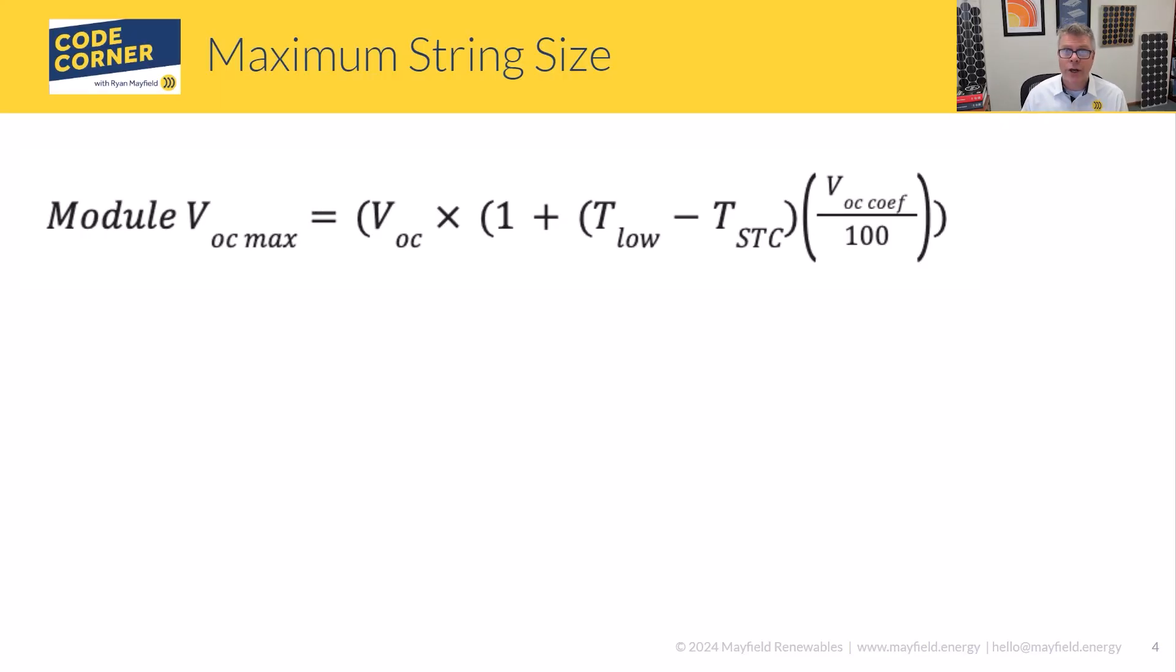On the flip side would be figuring out the maximum string size. Again, this is where code is really concerned. This is a calculation you absolutely have to do for code and being able to make sure that your system is code compliant. Module V_OC_max, that's what we're solving for - we're figuring out what is the new voltage based on the temperature that I'm exposing my module to. Open circuit voltage, that's the value straight from the data sheet. At standard test conditions, they'll tell you what the open circuit voltage is, and we're going to adjust from that.